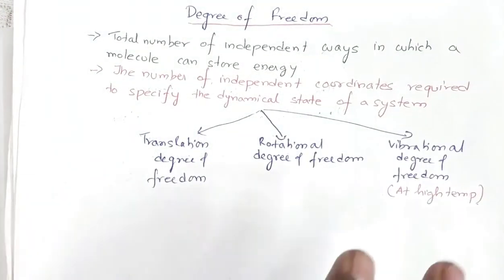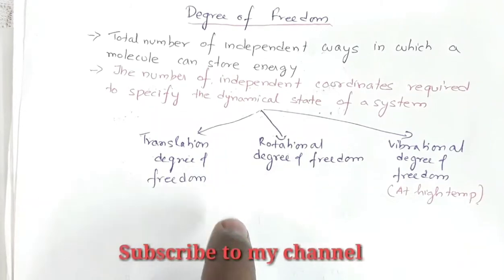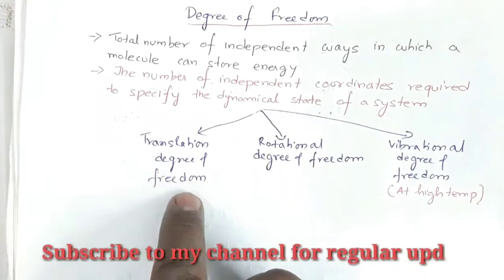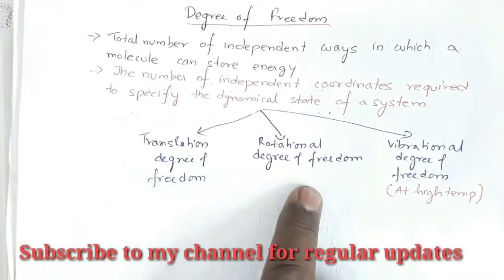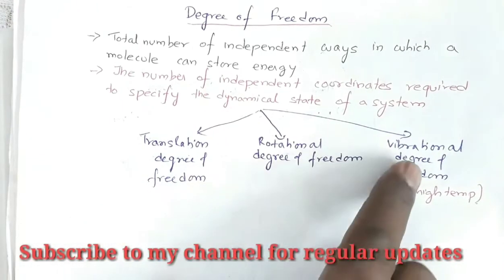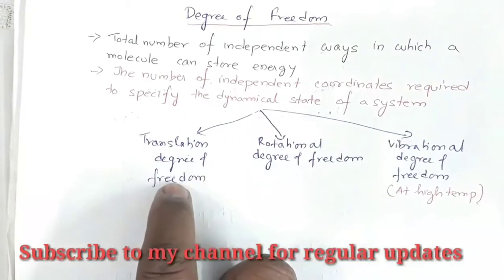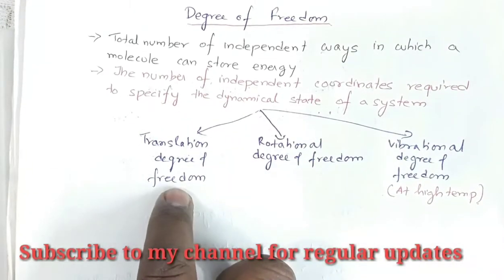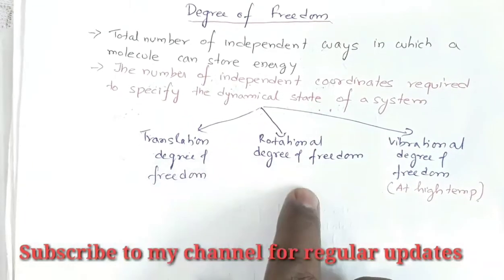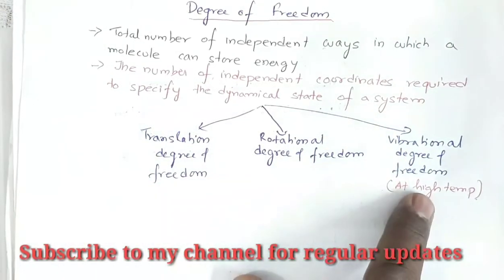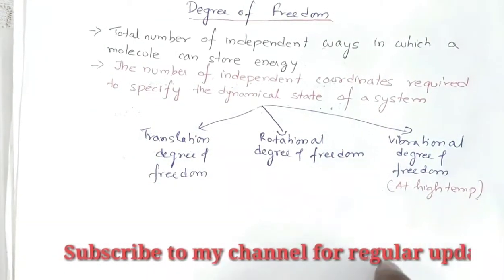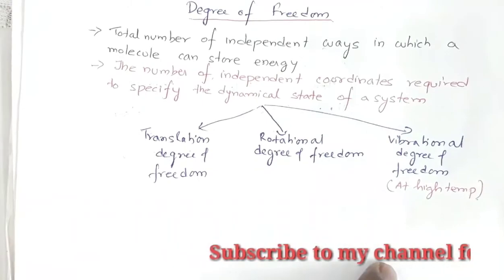Degree of freedom can be partitioned into three types: translational degree of freedom, rotational degree of freedom, and vibrational degree of freedom — due to translatory motion, rotational motion, and vibratory motion respectively.